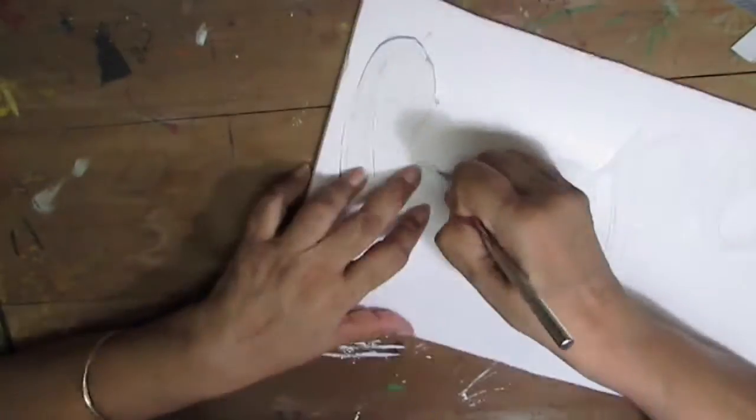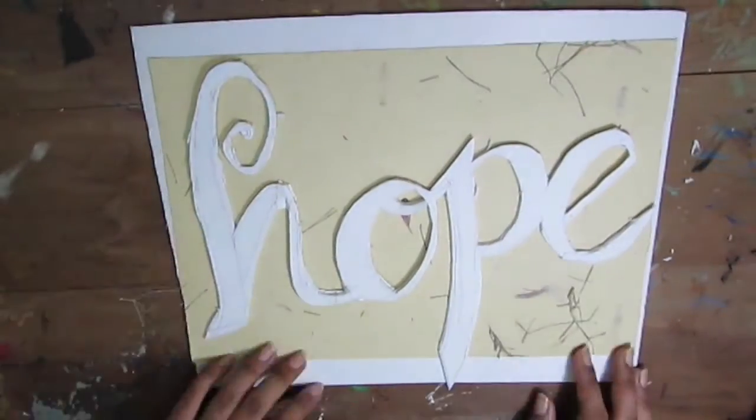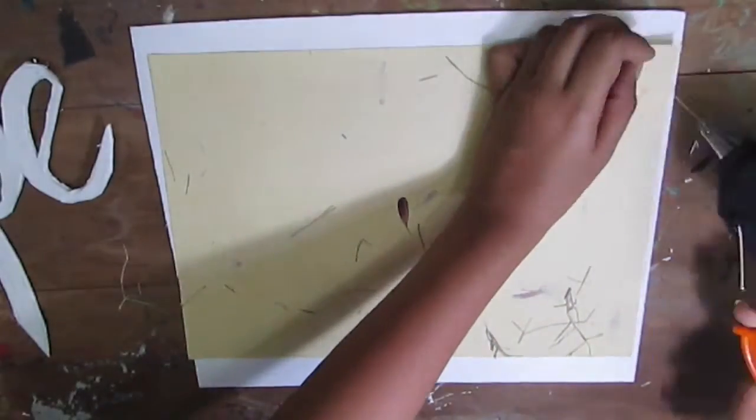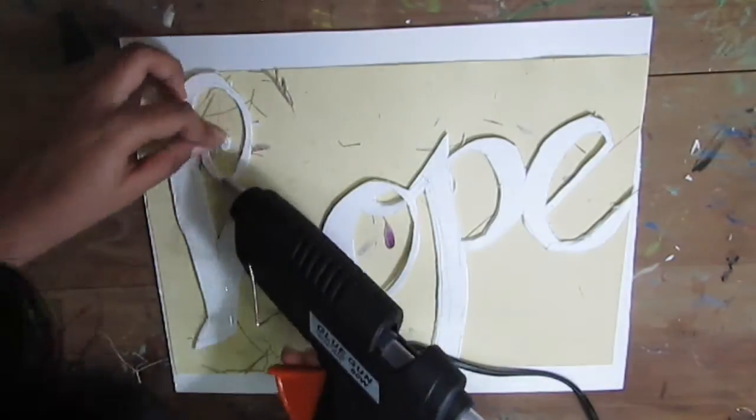With the help of an exacto knife I cut out the letters. Then I put it over a foam board and handmade paper and stuck it on with the help of my glue gun.